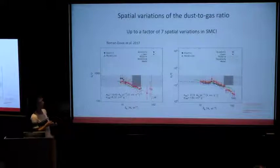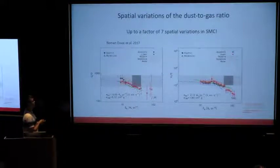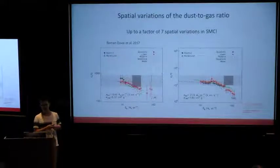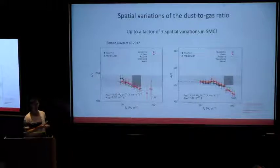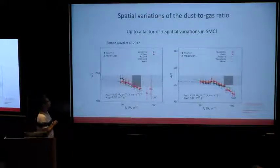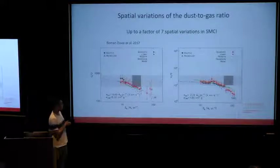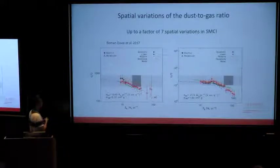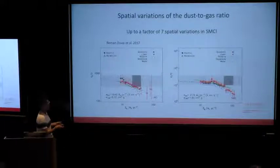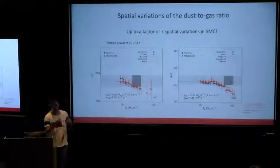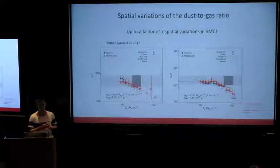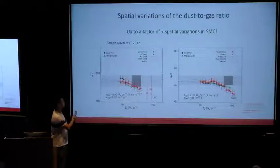But if you look at observations, you actually realize that the dust-to-gas ratio varies not only from galaxy to galaxy, but also within a galaxy. For example, observations of the LMC and SMC show that the dust-to-gas ratio changes as you go to higher surface density — as you go to denser areas, you have more dust, more metals in dust form. It can be up to a factor of seven in the case of the SMC.